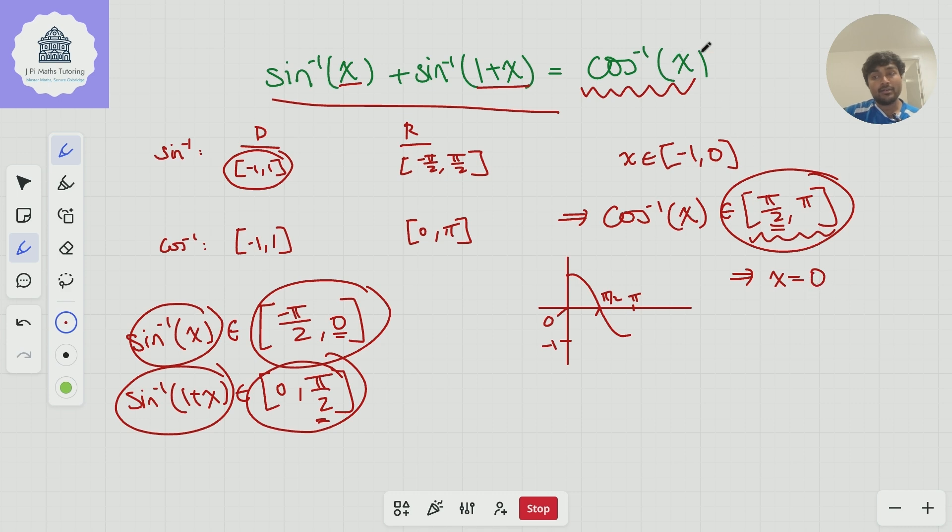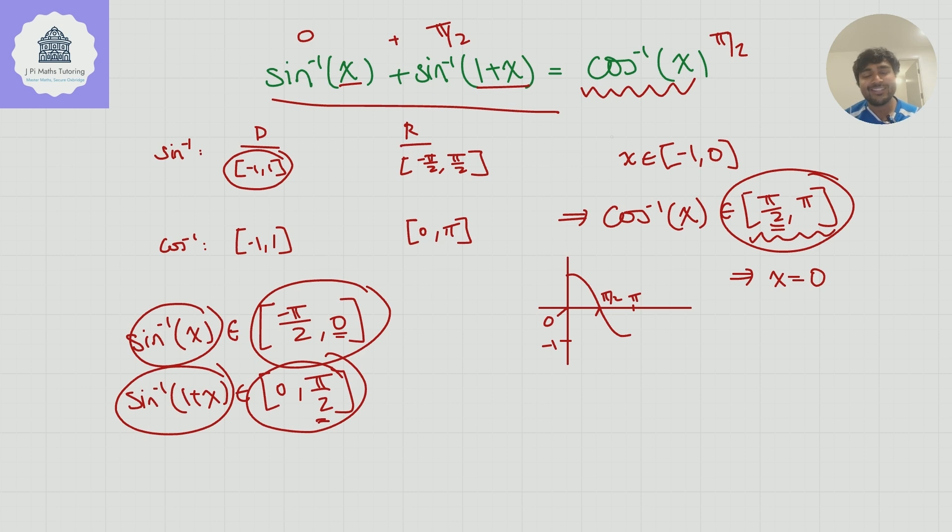And you can check if x equals 0, this right-hand side will be pi over 2. Inverse sine of 0, that's 0, and inverse sine of 1, that's pi over 2. And so that gives us not only a solution to this equation, but actually it shows us that this must be the only solution to this equation. And so therefore, the solution to this equation is x equals 0, and that's it. There are no other solutions.